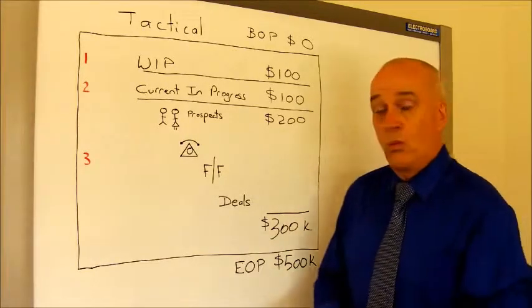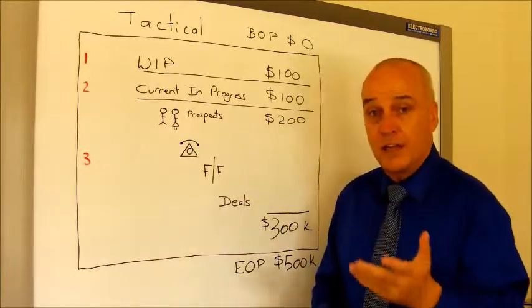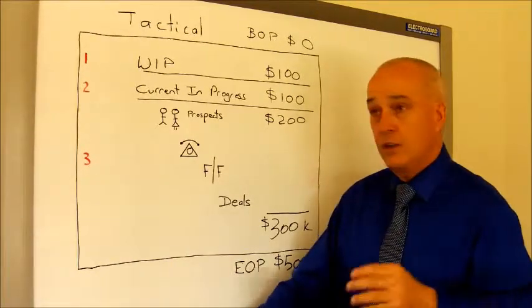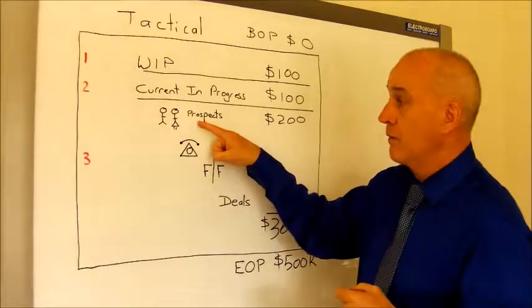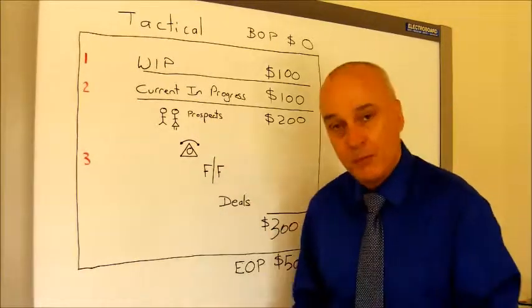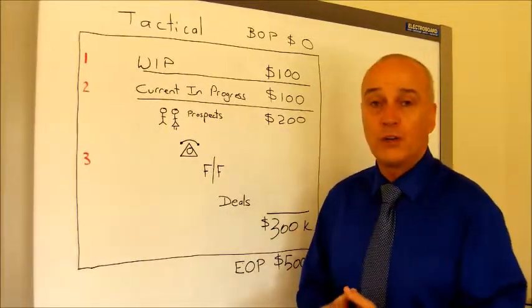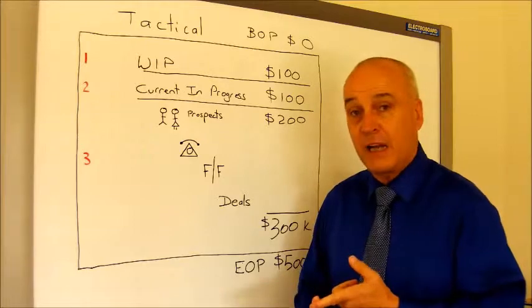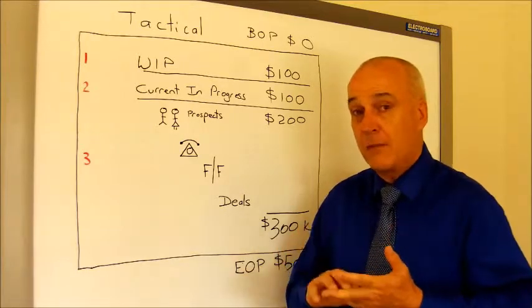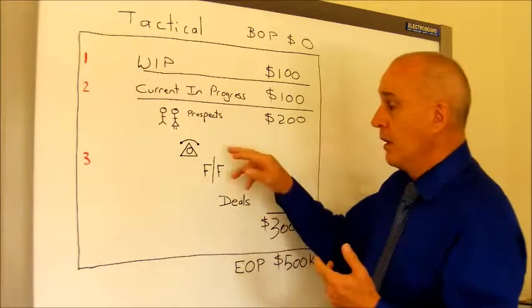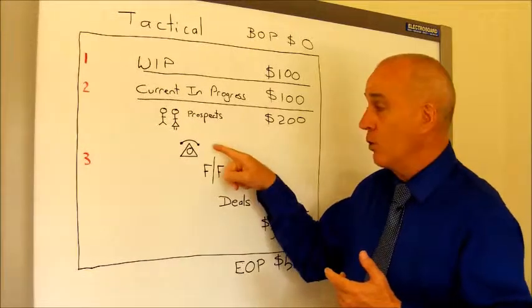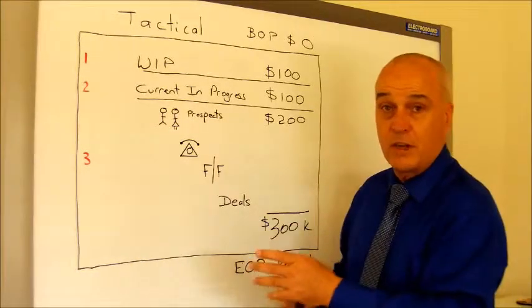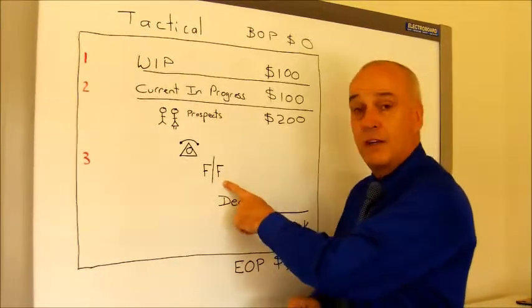What this tells us as business owners is that we need to be contacting more prospects. How many more prospects? What are we going to do to contact them? Do we have our databases? Have the databases been segmented? We're going to need to make some telephone calls, and the purpose of the telephone calls is to get face-to-face meetings.